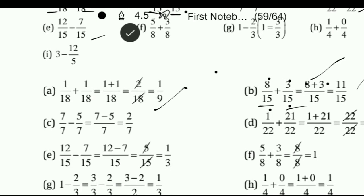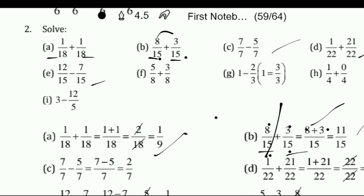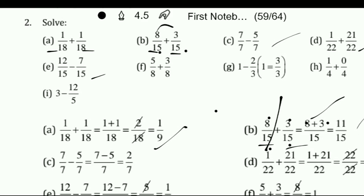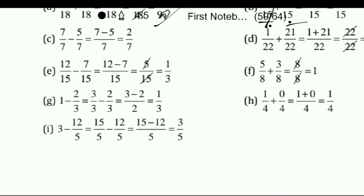See the G question: 1 minus 2 upon 3. In bracket, 1 equals 3 upon 3. So we write: 3 upon 3 minus 2 upon 3. We have the same denominator, so 3 minus 2 is 1 upon 3.